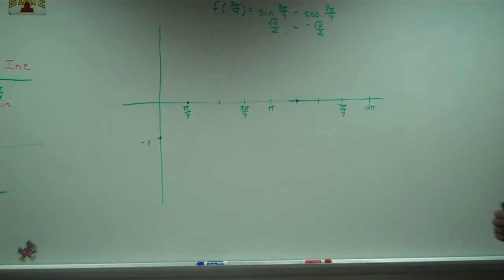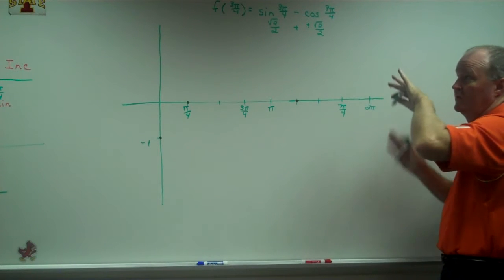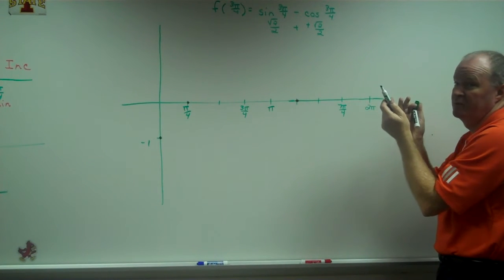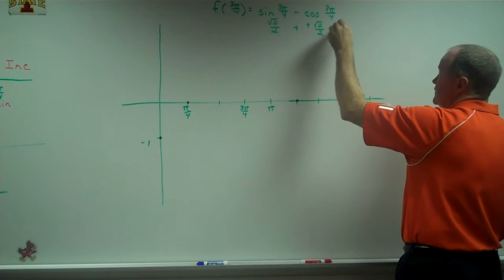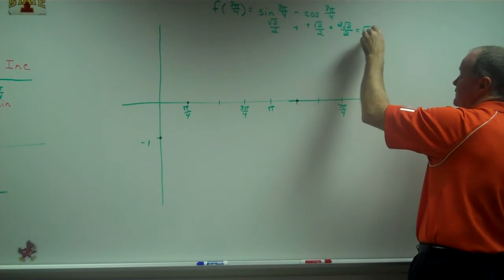which is the opposite of √2 over 2, which gives me, if I bring those together, how many √2 over 2, which is √2,